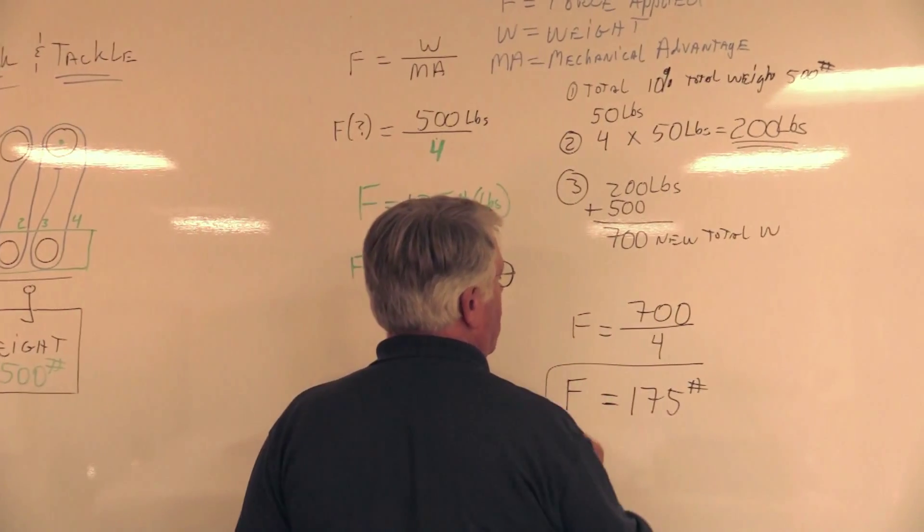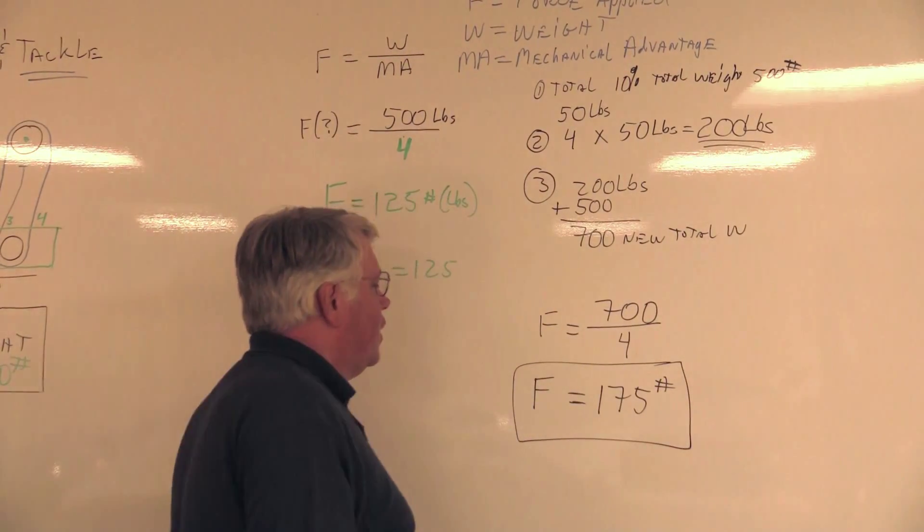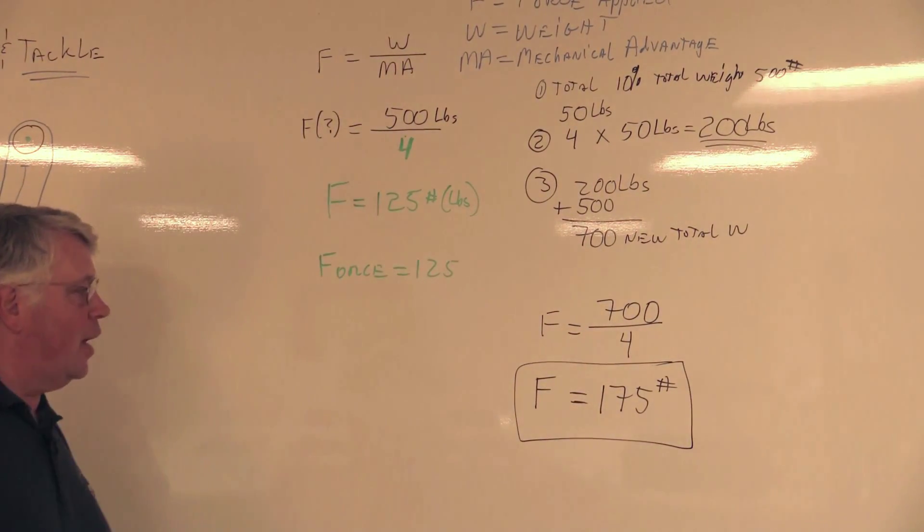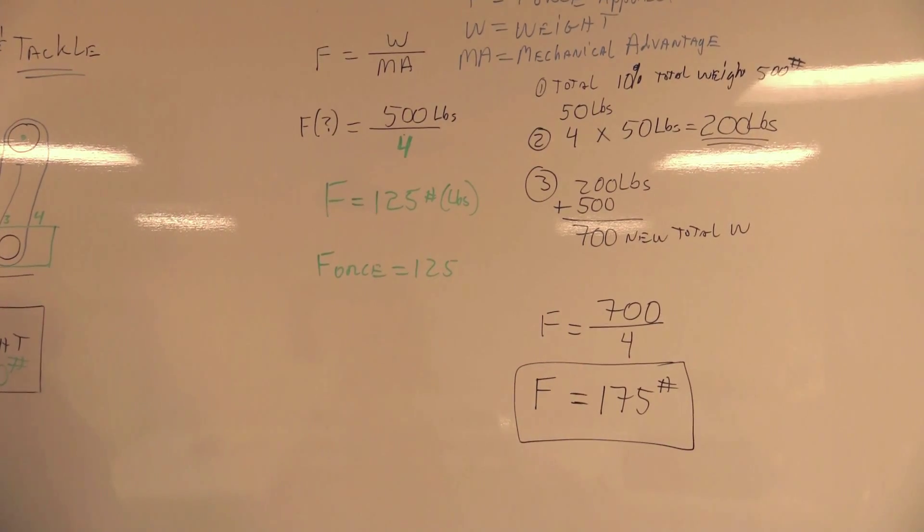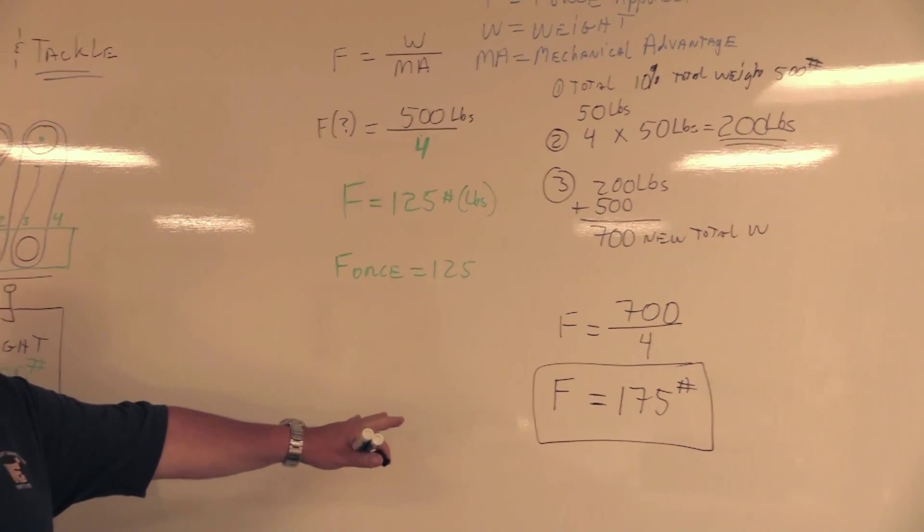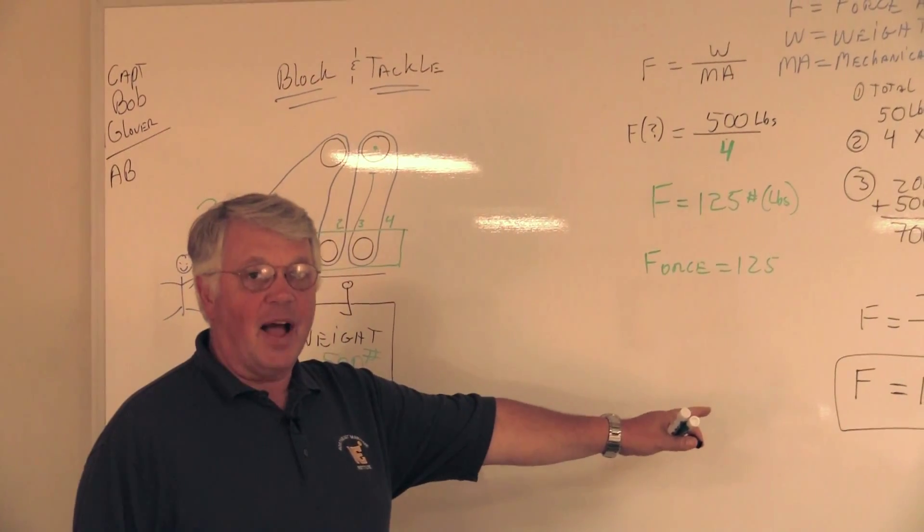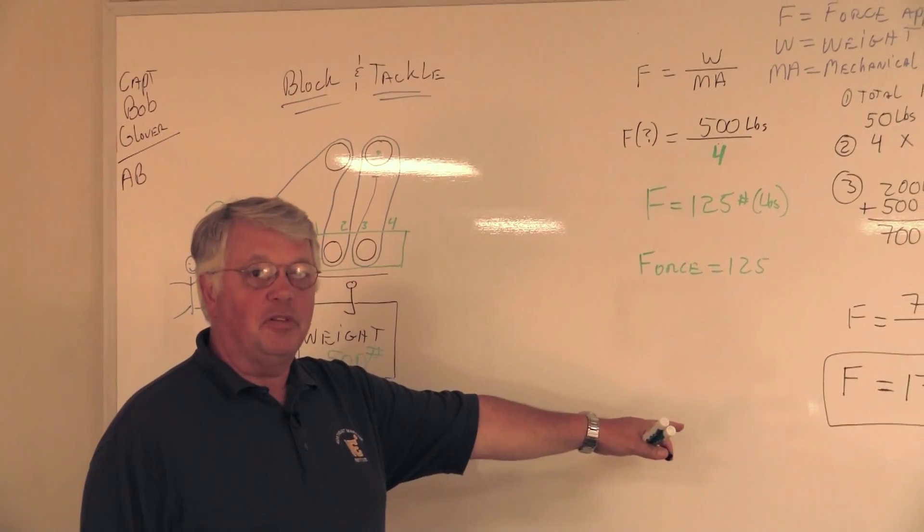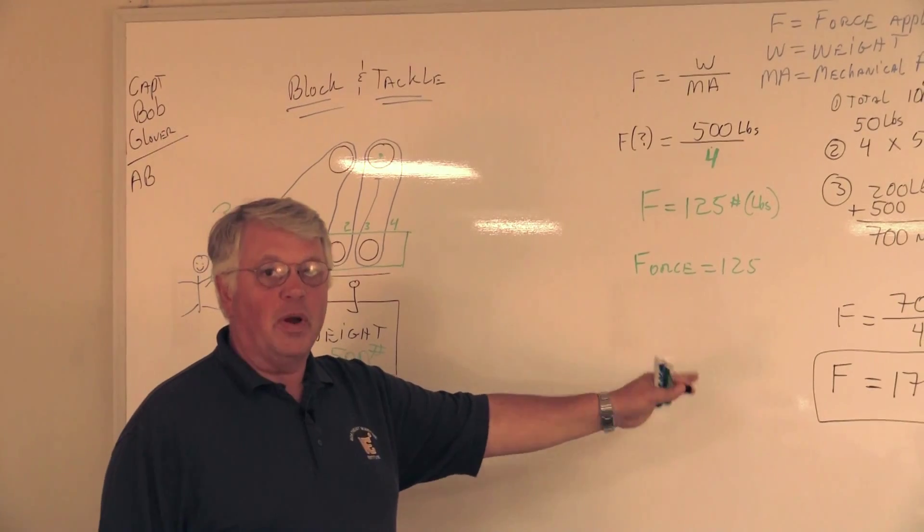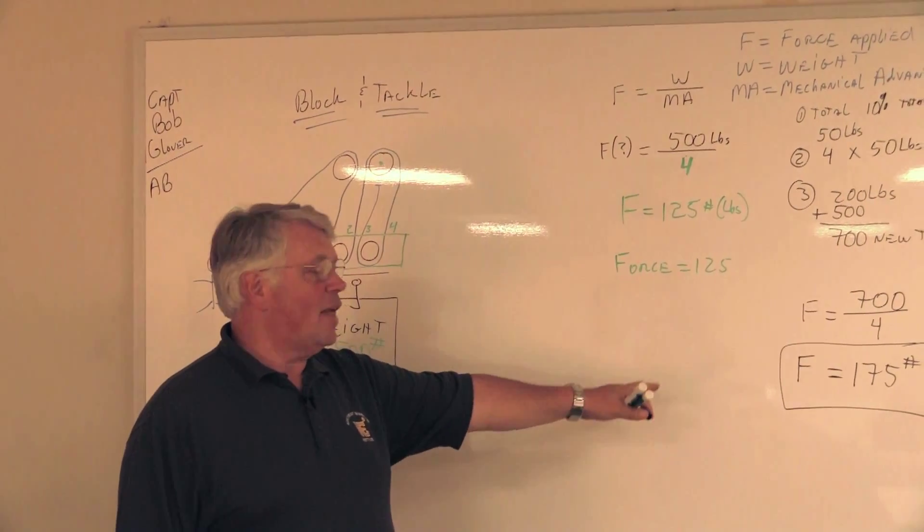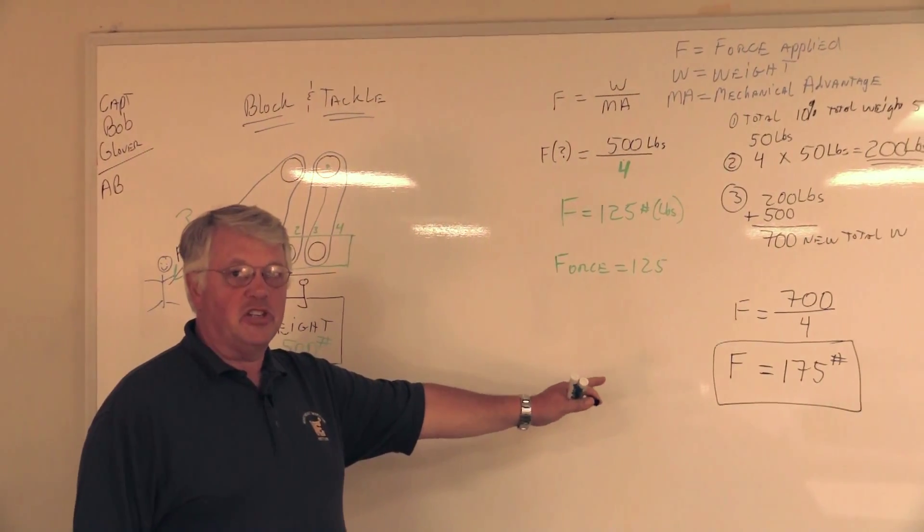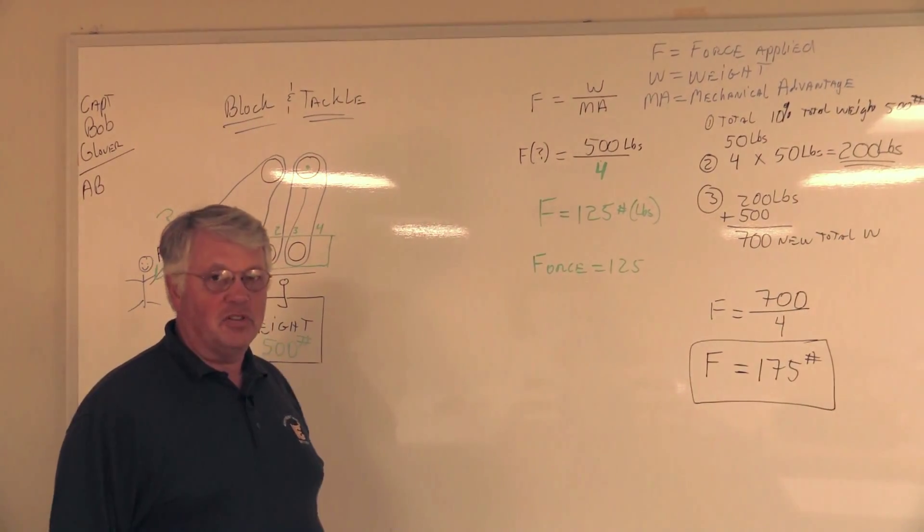So this here is the more realistic number that I've got to deal with, OK, as a mariner in calculating how much force I'm going to have to apply. Now I can do this by having four or five guys jump on that line and pull together, or I can take it to a windlass or a capstan, anything that will create using energy to create that force of the pull.